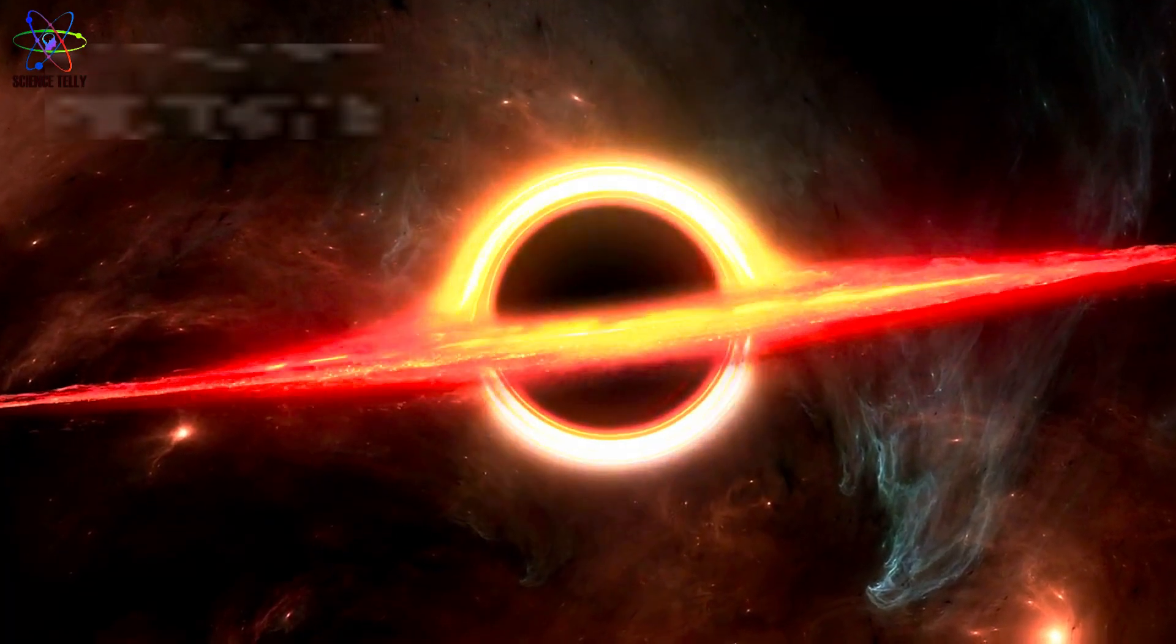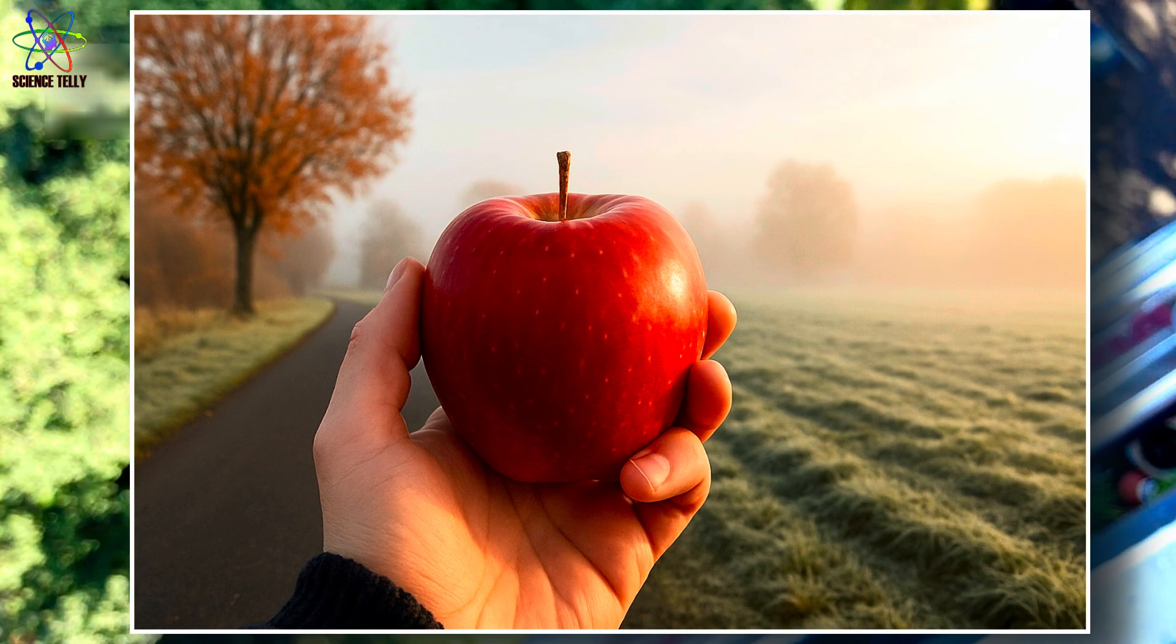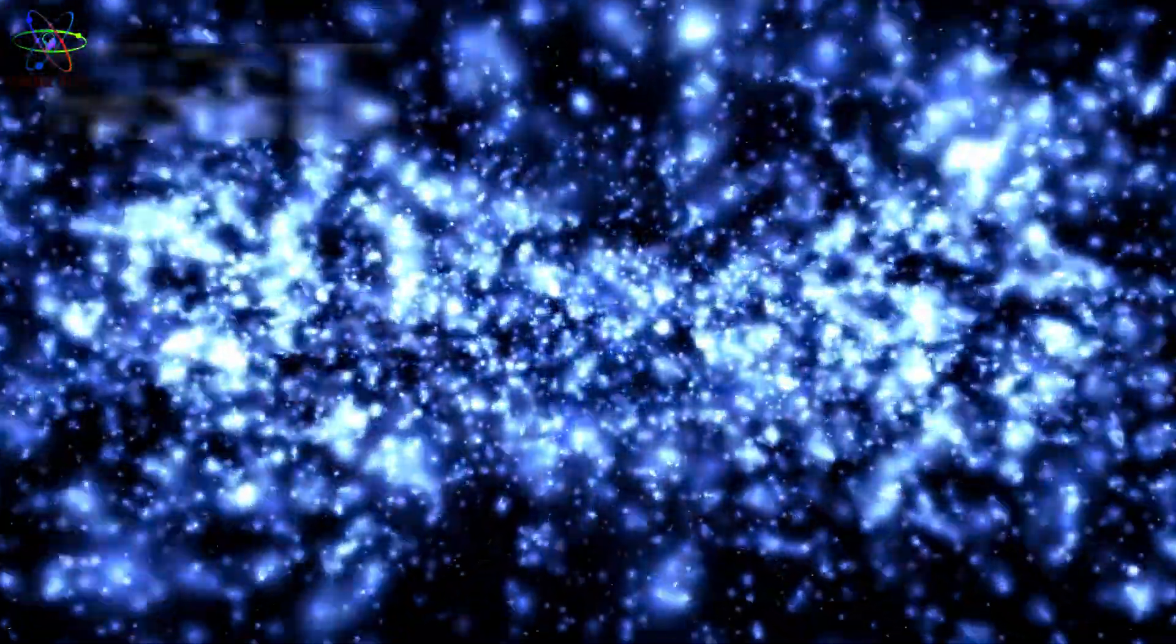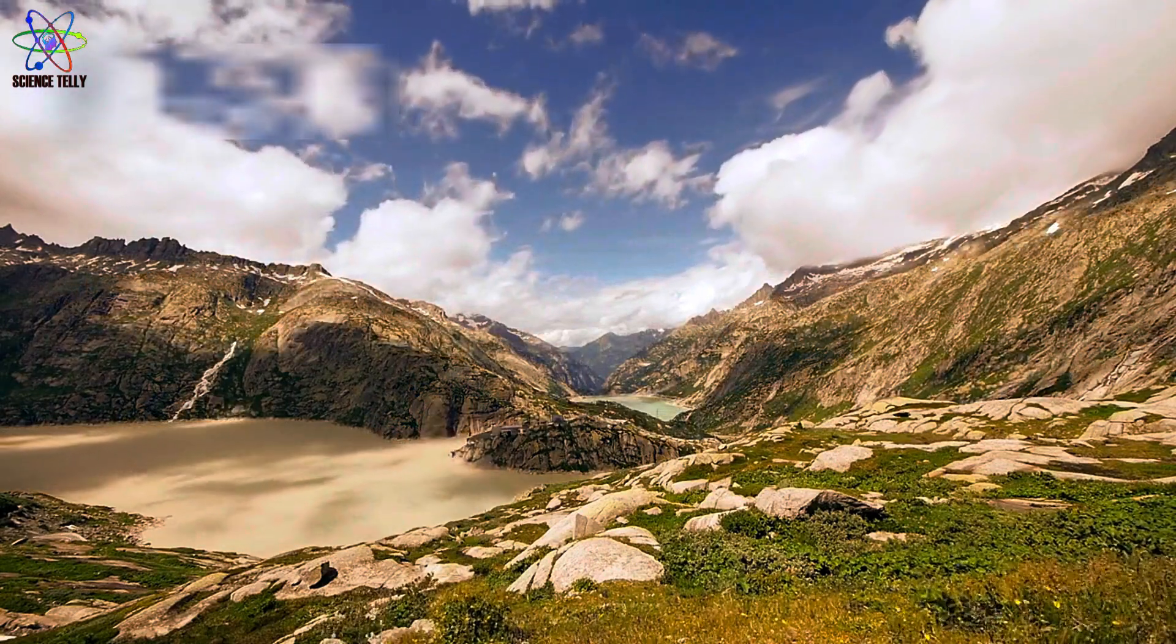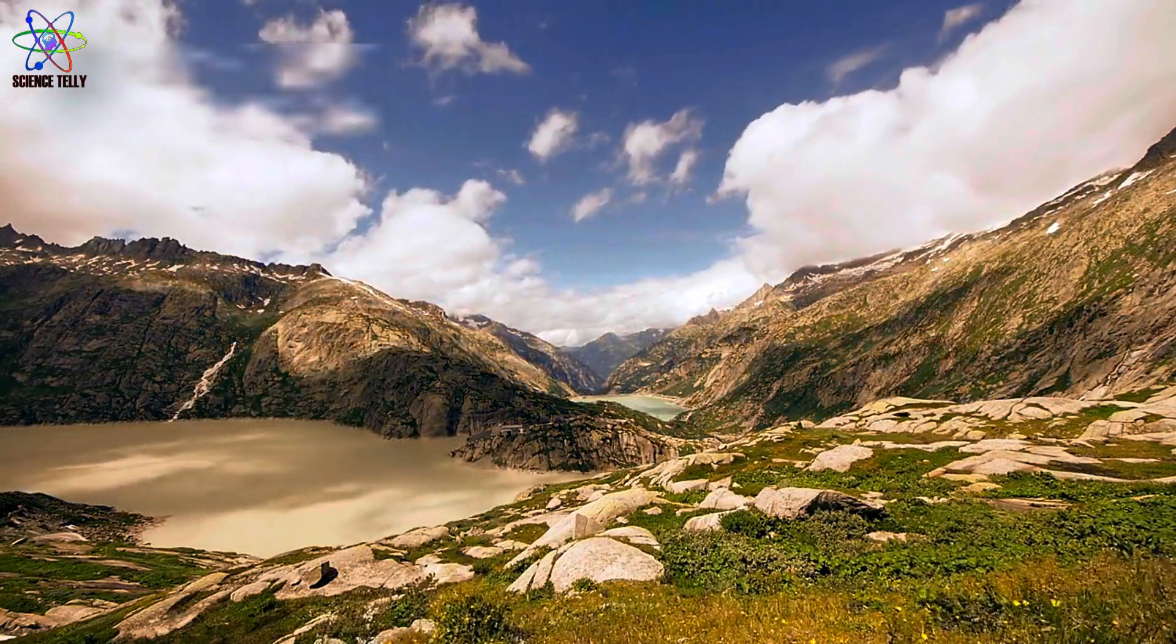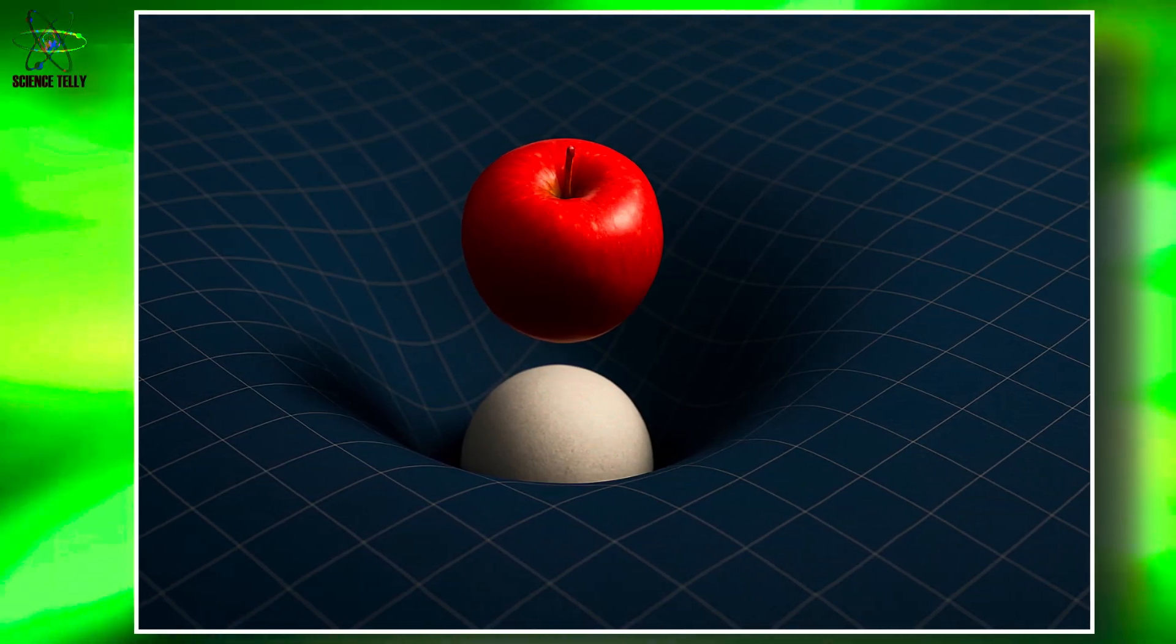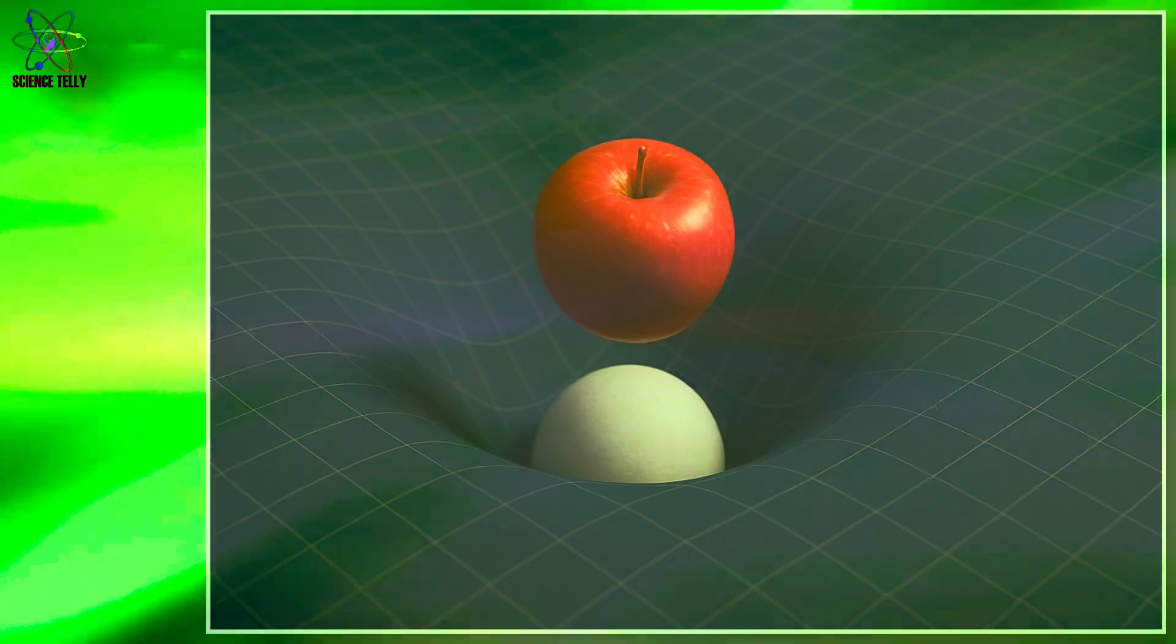Now here's the twist. Imagine that apple again, just hanging there in your hand. It wants to move forward through time, because everything does. But near Earth, time is ticking a tiny bit slower than it is even just a few feet above. So when you let go, the apple isn't being pulled down. It's following the path of least resistance through spacetime.